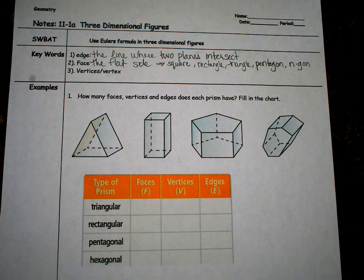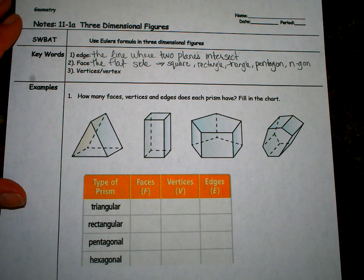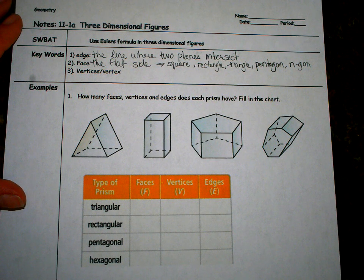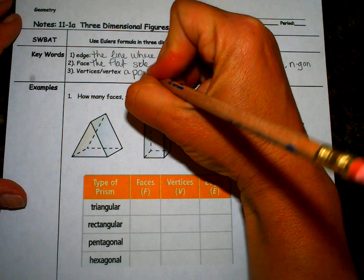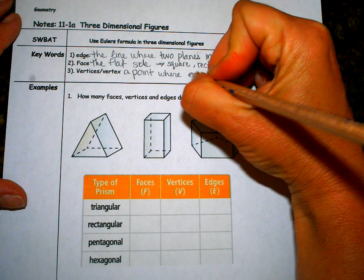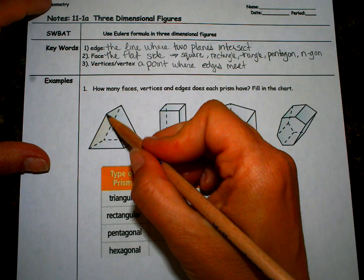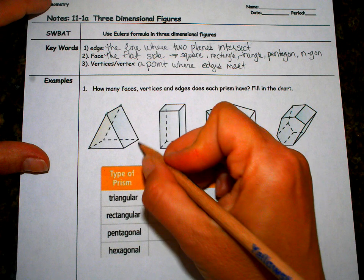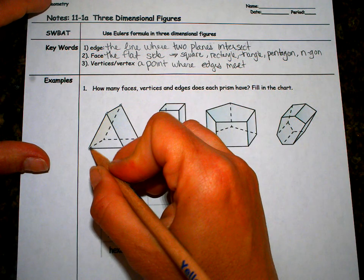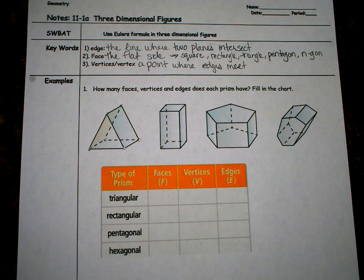And then a vertices, a vertex, is not a corner of two planes, but it is a point where edges meet. So a vertex is here, here, here, here, here, and look behind here. So what we're going to go through now is we're going to go through this chart and kind of fill in everything and talk about the faces, the edges and all of that.